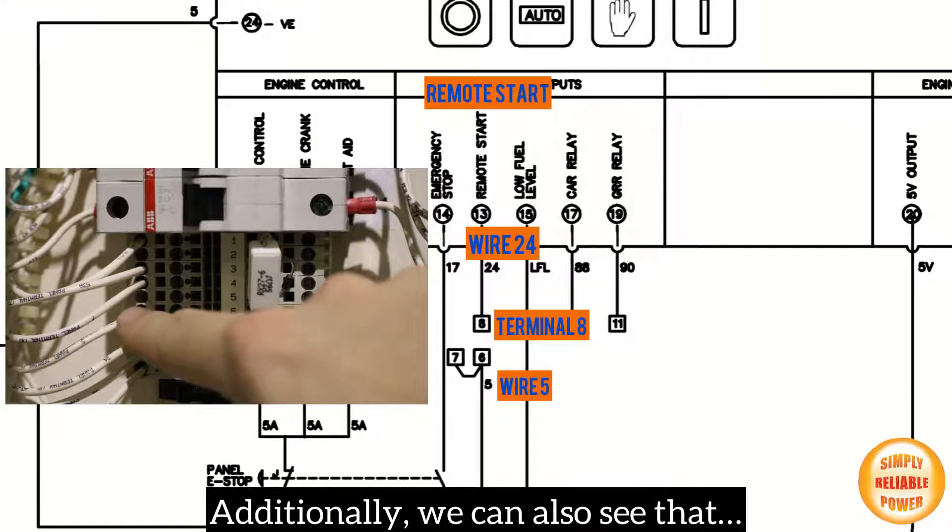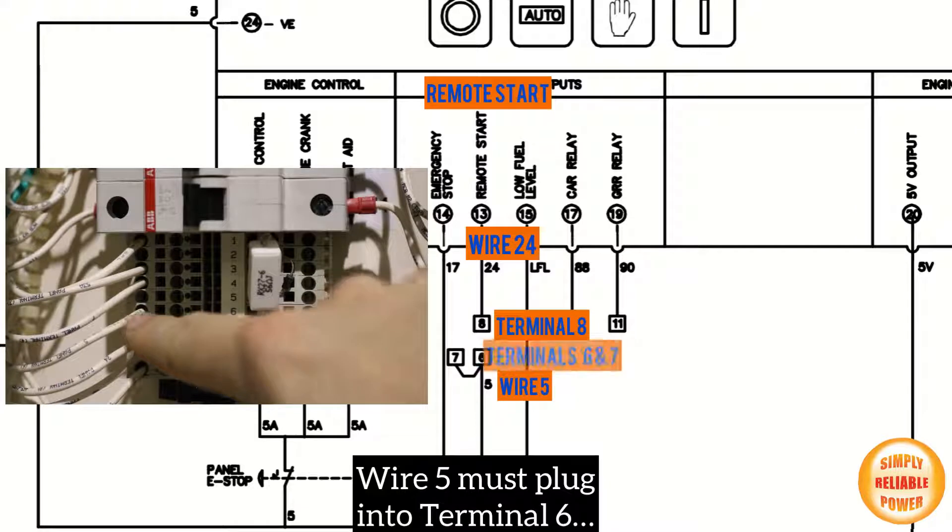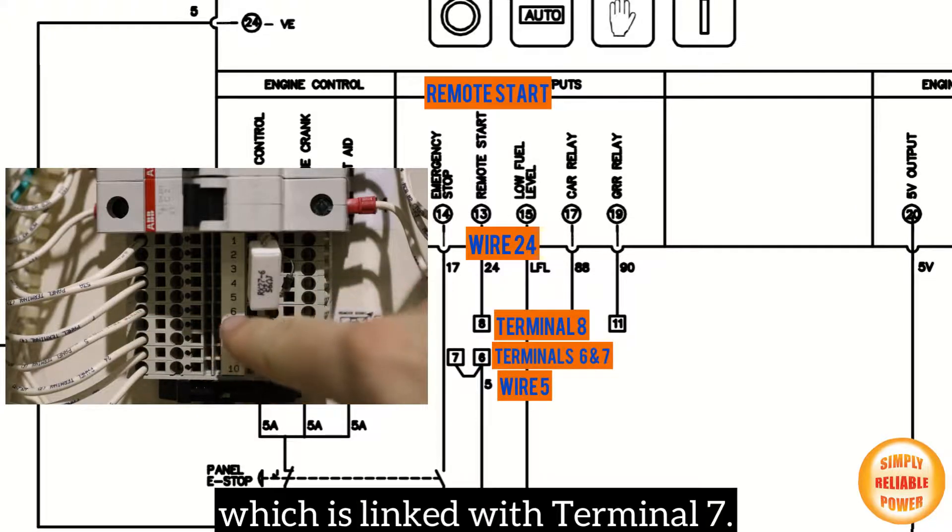Additionally, we can also see that wire 5 must plug into terminal 6, which is linked with terminal 7.